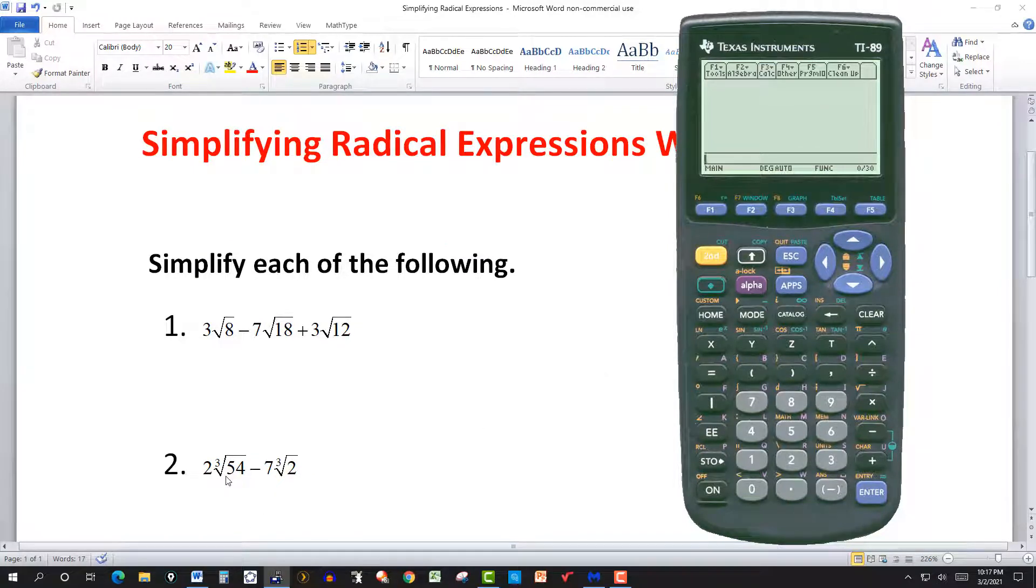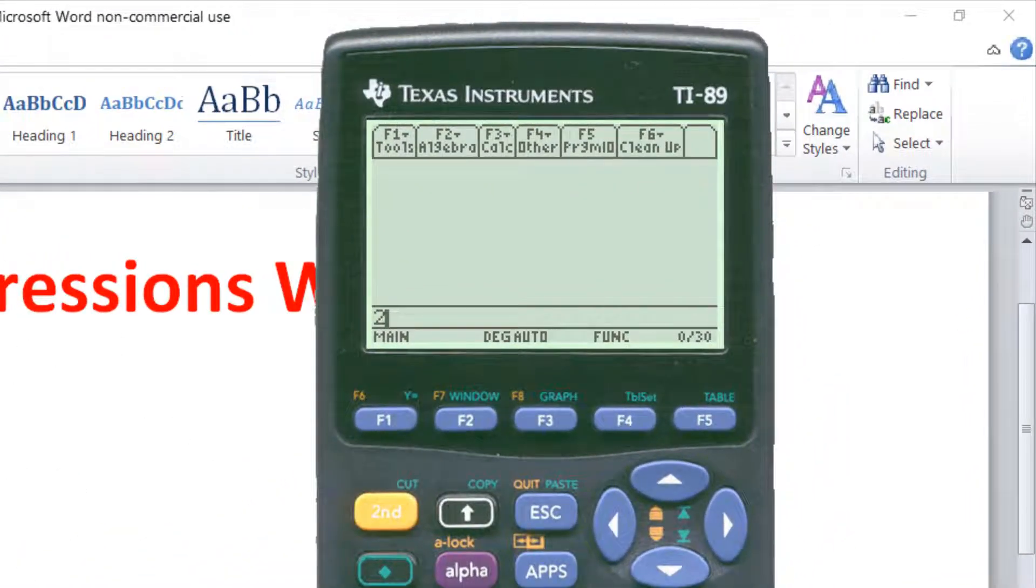Now in this case we have 2 cube root of 54 minus 7 cube root of 2. So again we have to simplify this out here using the calculator. This will be 2, and then this will be parentheses, and then 54 here. And here in this particular calculator I have to use the exponential to the 1 third to get a cube root.